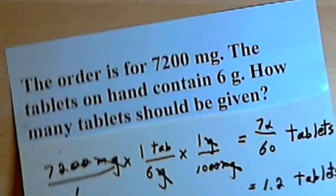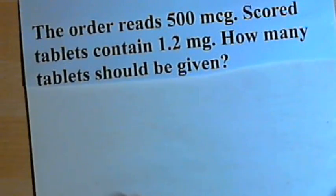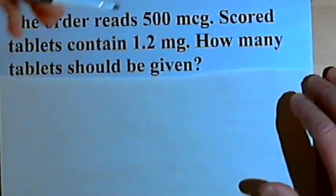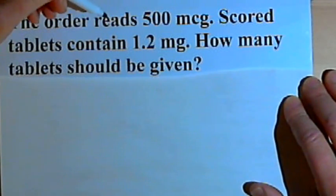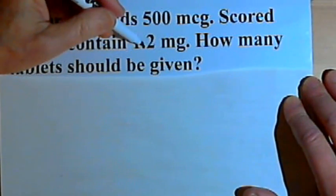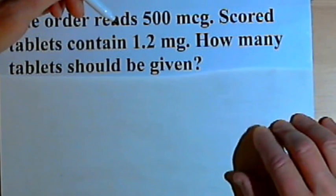Okay. Here's one involving micrograms. The order reads 500 micrograms. Scored tablets contain 1.2 milligrams. How many tablets should be given?